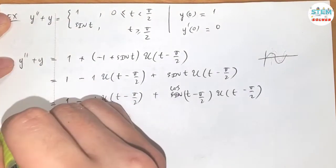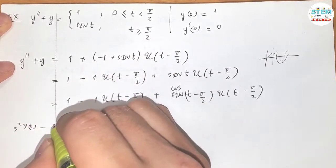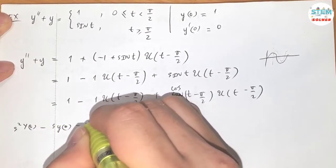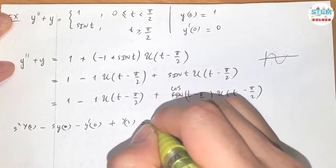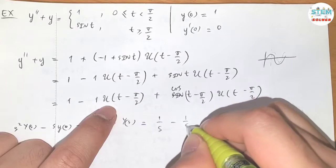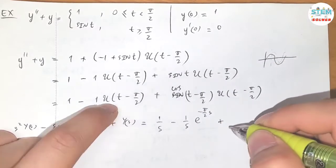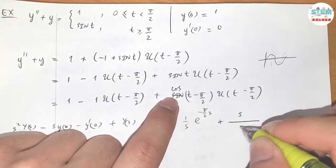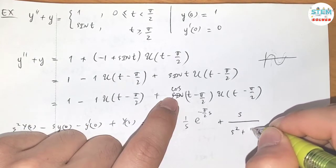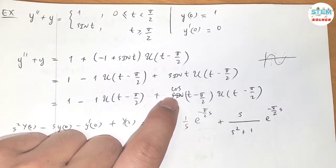Now it's time to apply the Laplace transform on both sides. On the left side, I have s squared capital Y of s minus s y of 0 minus y prime of 0 plus capital Y of s equals on the right side, L of this is 1 over s, L of this is 1 over s e to the negative pi over 2 s, plus L of this is s over s squared plus 1, e to the negative pi over 2 s.